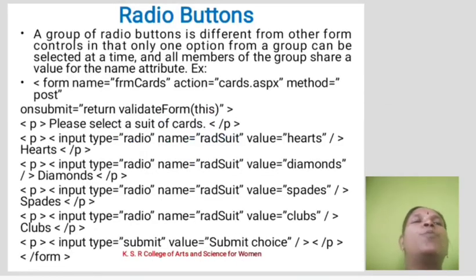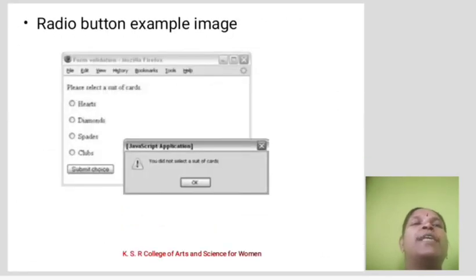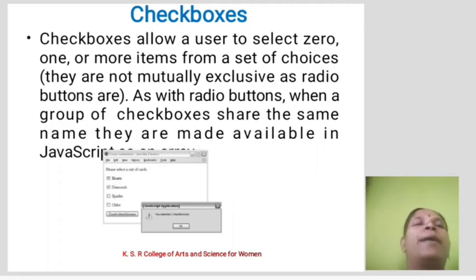Radio buttons: A group of radio buttons is different from other form controls in that only one option from a group can be selected at a time, and all members of the group share the same name attribute. Checkbox: Checkboxes allow users to select zero, one, or more items from a set of choices. As with radio buttons, when a group of checkboxes shares the same name, they are treated as a collection in JavaScript.